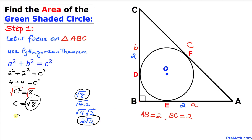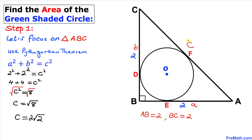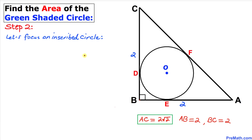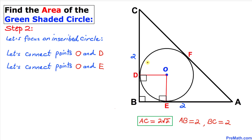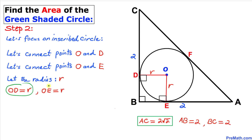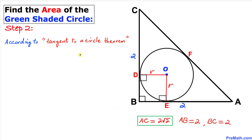So C equals two times the square root of two, and since side C corresponds to AC, we have AC equals two times the square root of two. Now let's focus on the inscribed circle. Let's connect points O and D, and likewise connect point O and E. Let's call this radius lowercase r, so OD equals r and OE equals r.